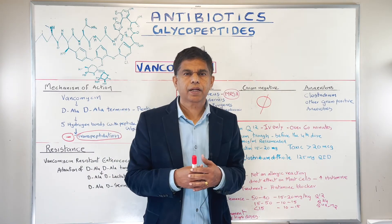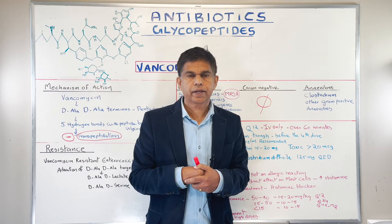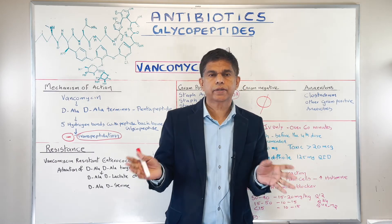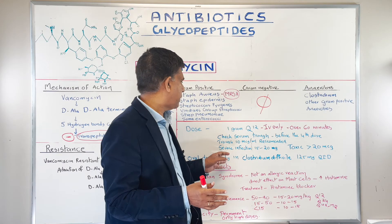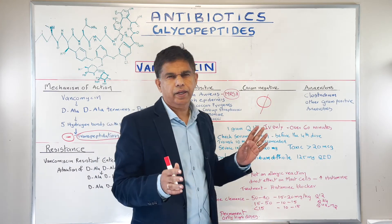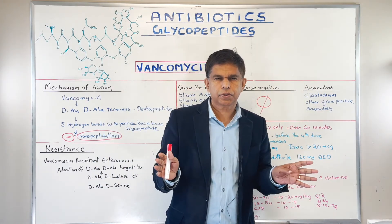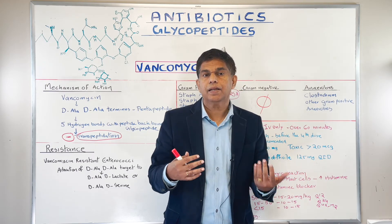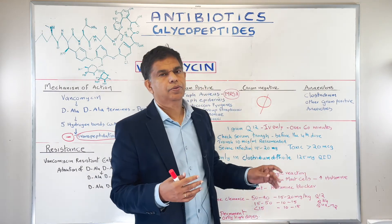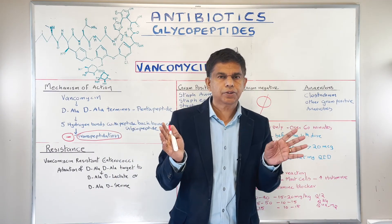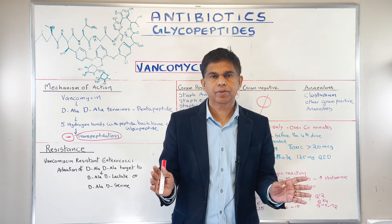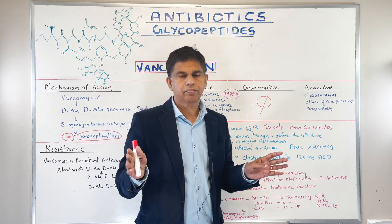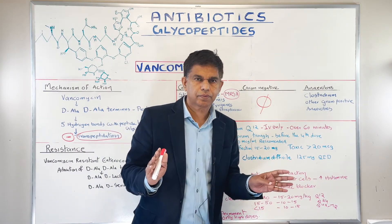It is also very important to check the serum trough level of vancomycin. You check it before the fourth dose. You want to keep it around 10 micrograms per mL in normal situations. If you have a severe infection, keep it higher — 15 to 20 micrograms per mL — but don't go greater than 20. Going above 20 is where complications occur, including kidney failure and other target organ problems.